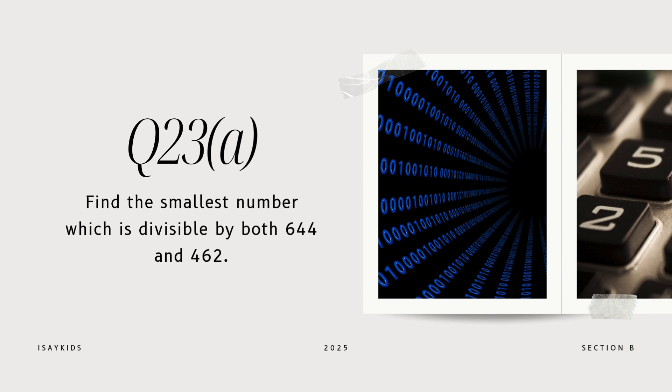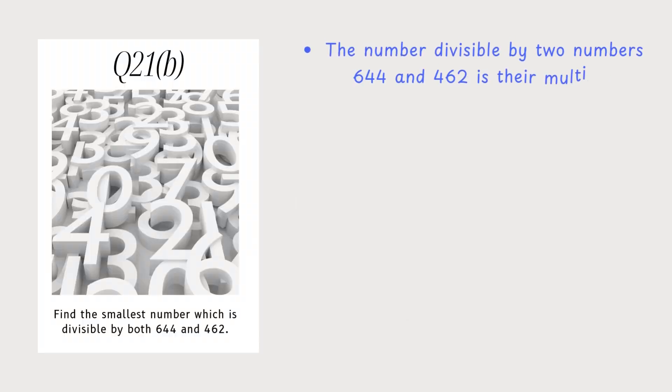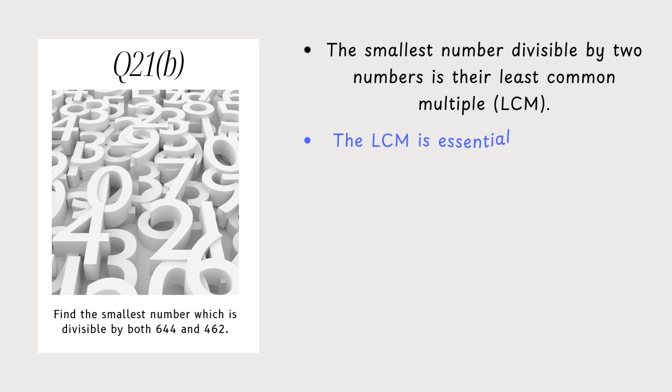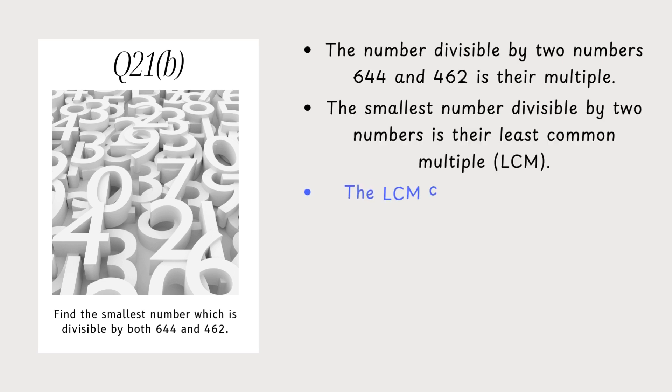Find the smallest number which is divisible by both 644 and 462. The number divisible by two numbers is their multiple. The smallest number divisible by two numbers is their least common multiple, or LCM. LCM is essentially the smallest number that the two numbers can divide into without leaving a remainder.